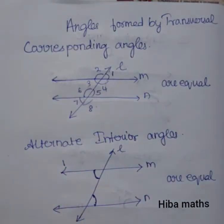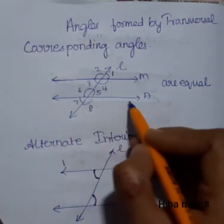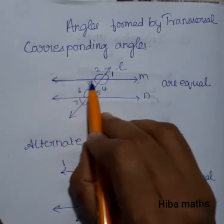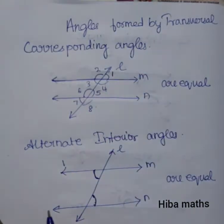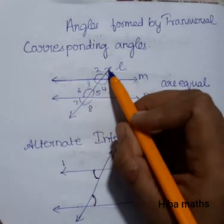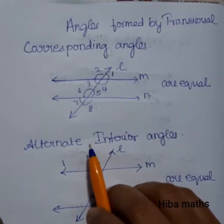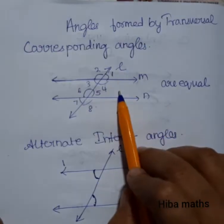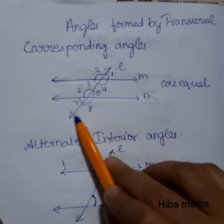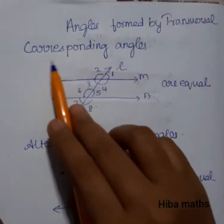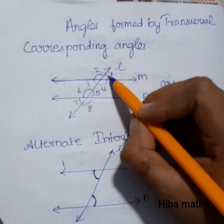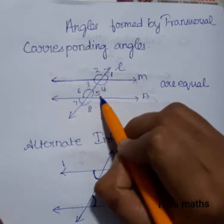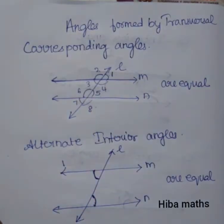Angles formed by a transversal. We will talk about two parallel lines. Here we have a parallel line and another parallel line, and this transversal crosses both of them. These are the same parallel lines we will be working with.